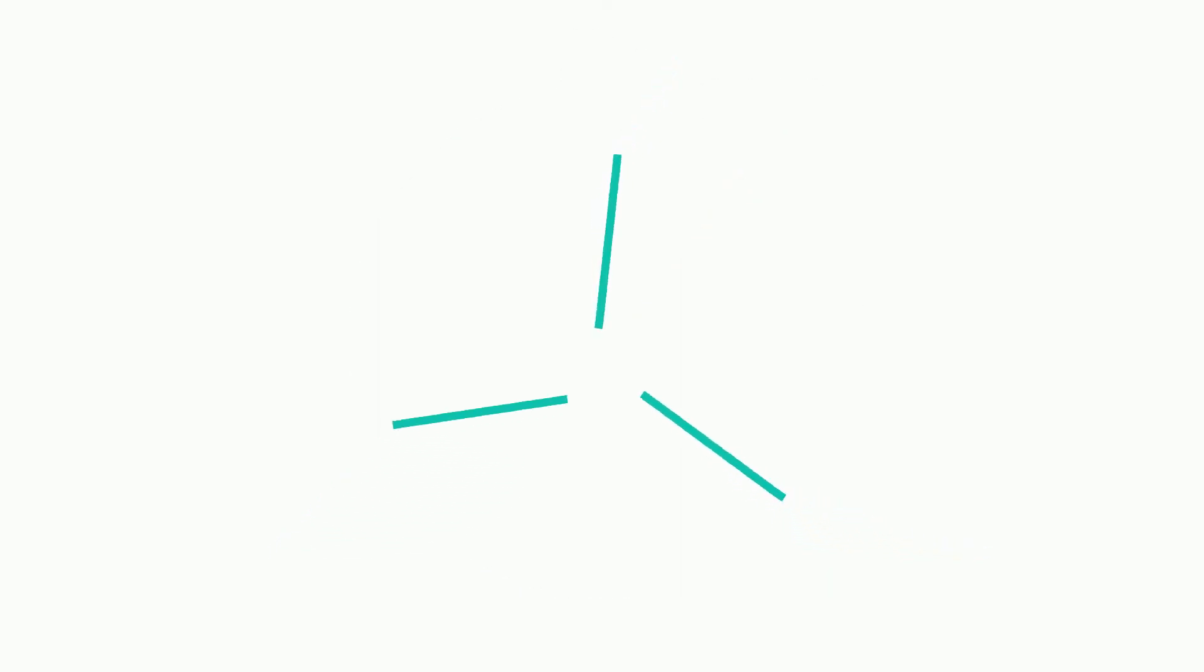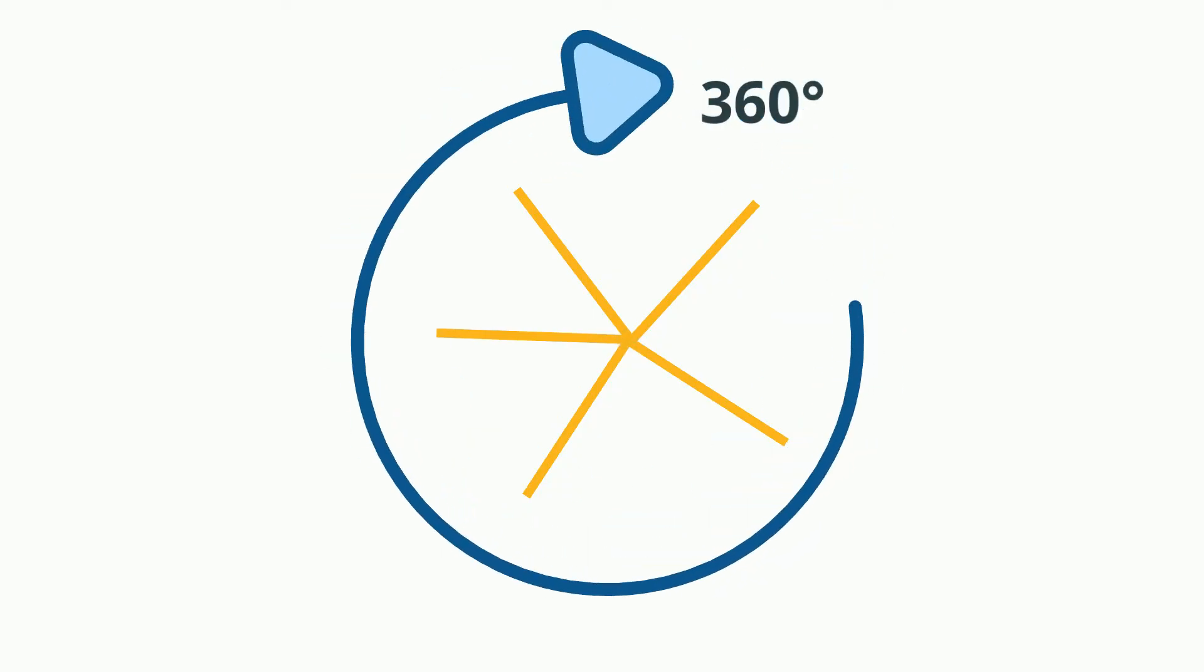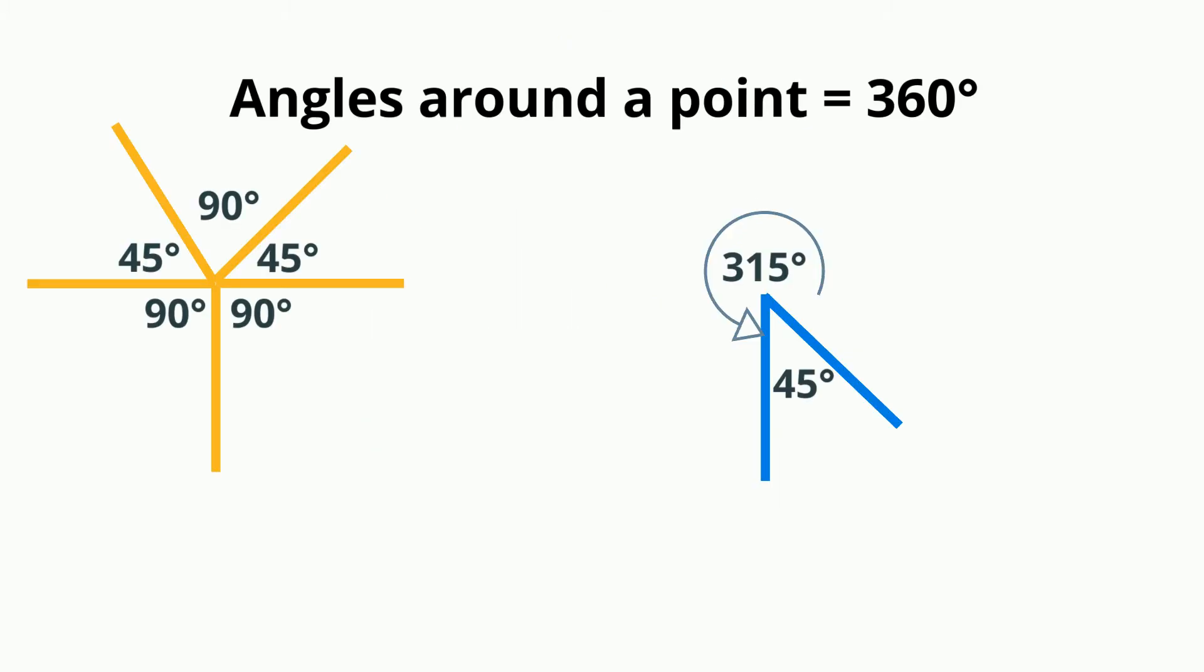The point is the location where the lines intersect. At first I will show it with a blue dot and then I'll remove the dot and you can see where the point is. The fact that the angles around a point add to 360 degrees can be used to find missing angles.